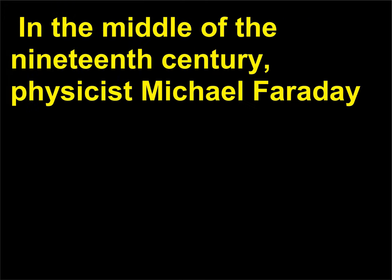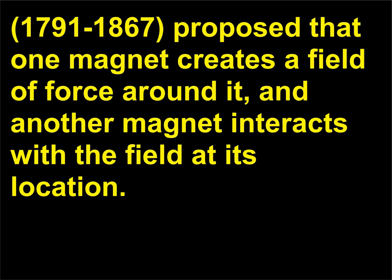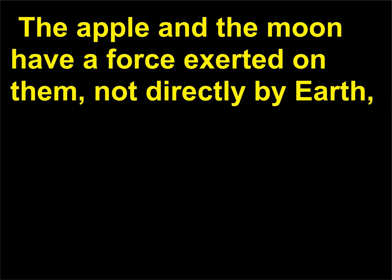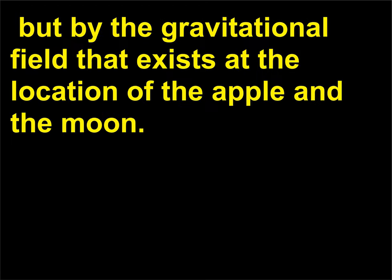In the middle of the 19th century, physicist Michael Faraday (1791–1867) proposed that one magnet creates a field of force around it, and another magnet interacts with the field at its location. Based on the field idea, Earth then creates a gravitational field. The apple and the moon have a force exerted on them, not directly by Earth, but by the gravitational field that exists at the location of the apple and the moon.